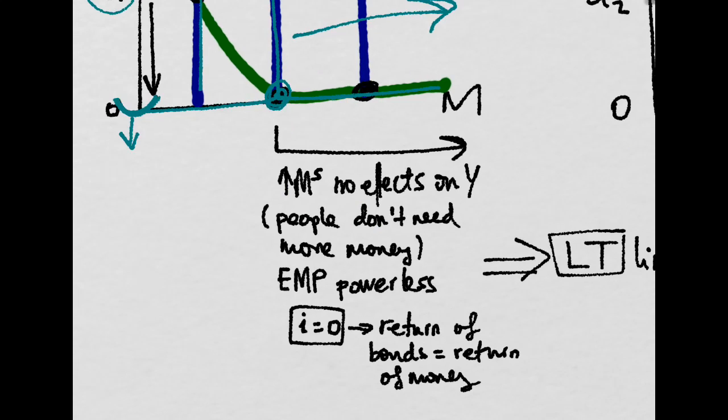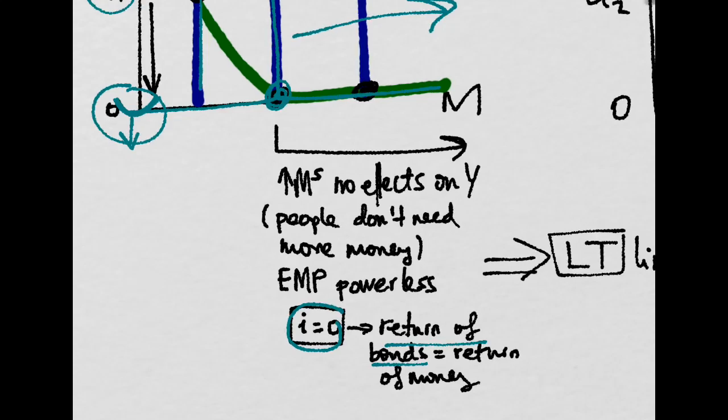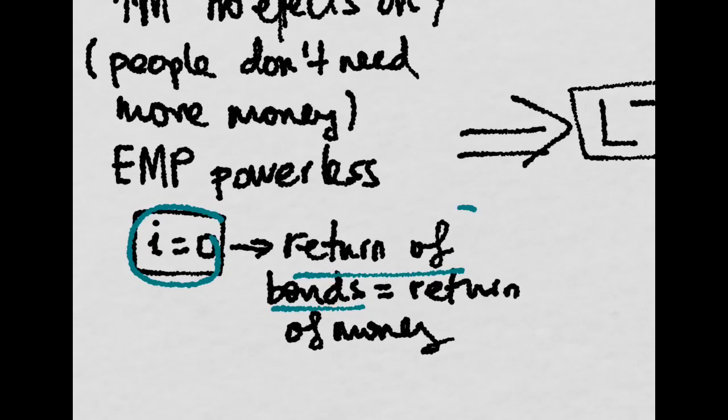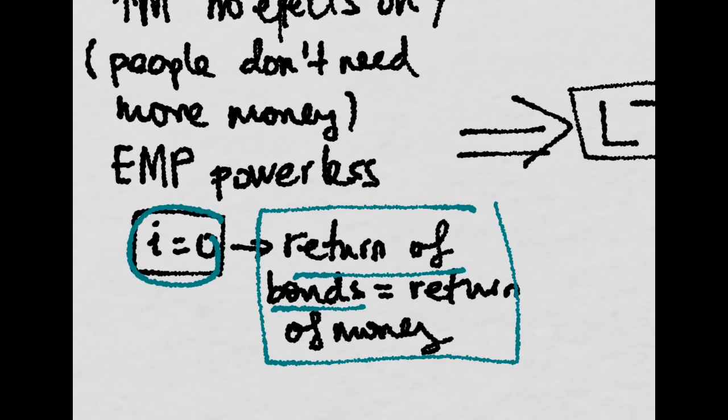Bear in mind that at this point where the nominal interest rate of bonds, that is the return of bonds, is zero, then the return of bonds will be equal to the return of money. So people wouldn't really care about holding bonds or holding money.